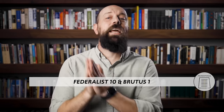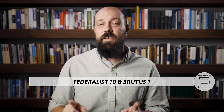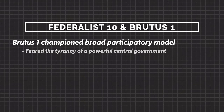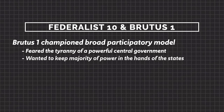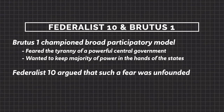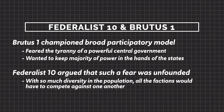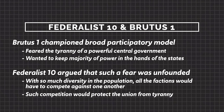Second, you can see the tension between these three models represented in the debate between two other foundational documents: Federalist 10 and Brutus 1. With respect to models of democracy, Brutus championed the broad participatory model. The group who wrote this feared the tyranny of a powerful central government and wanted to keep the majority of the power in the hands of the states. Federalist 10 argued that such a fear was unfounded because in a large republic like the United States, with so much diversity in the population, all the factions would have to compete against one another and such competition would protect the Union from tyranny.